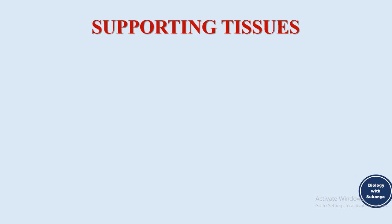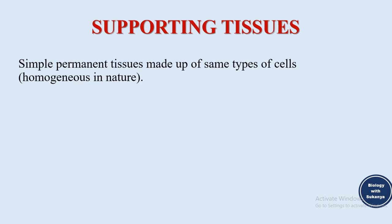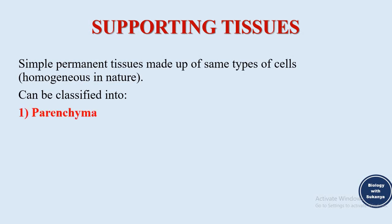Supporting tissues are simple permanent tissues made up of same types of cells — that is, they are homogeneous in nature. All cells within the tissue are of the same type. These supporting tissues can be classified into parenchyma, colenchyma, and sclerenchyma.